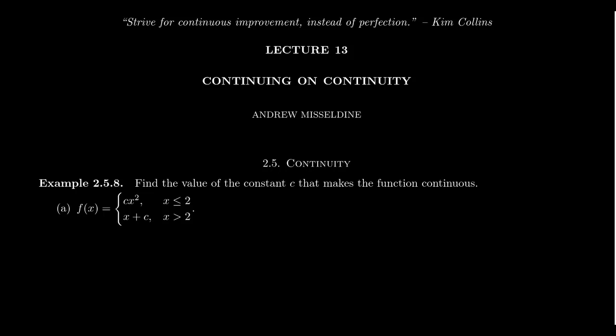In our previous lecture, number 12, we introduced the idea of continuous functions — those functions whose graph can be drawn with one continuous stroke of your pen, or in other words, those functions for which the limit of the function, the limit as x approaches a of f(x), is equal to f(a). The limit and the function agree with each other for these numbers x equals a inside the domain of the function.